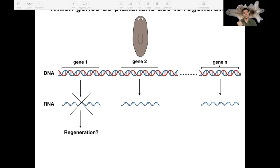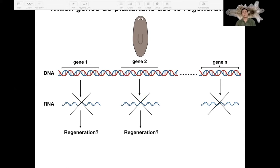Imagine you have a worm without gene one — you cut away its head, and if gene one is not required, the head will regenerate normally. But if gene one is required, you may see no regeneration at all, or a head that looks very abnormal — very big, very small, or perhaps a tail regenerates instead of a head. It's not just enough to regenerate anything; it's also important to regenerate the correct thing in the correct form, size, and proportion.